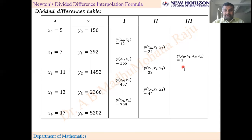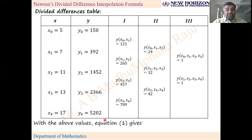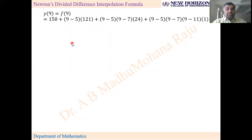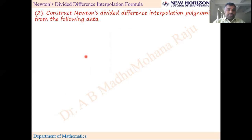For third order differences, note that we do not go to fourth order because the numerator becomes zero, making everything zero. So we list out only the upper diagonal values and substitute them in the formula, obtaining f(9) = −810.